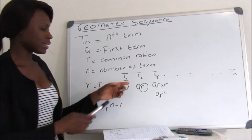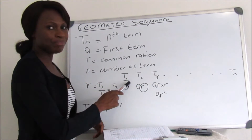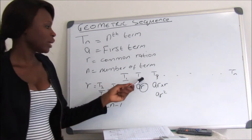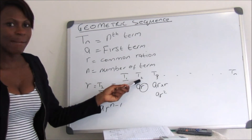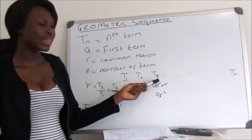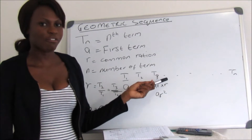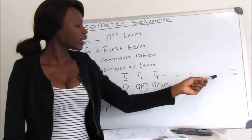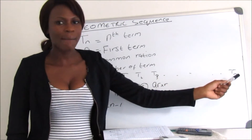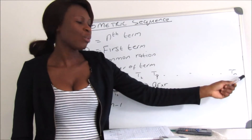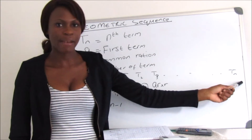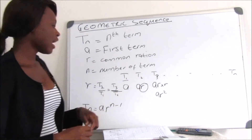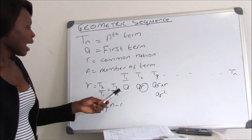Remember, T1 is our first term, T2 is our second term, and T3 is our third term, going on and on up until the nth term, which is Tn.